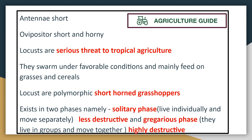In the solitary phase, they are found individually and travel separately. But as soon as favorable conditions arrive, they form swarms and move in groups. And this gregarious form is more destructive.